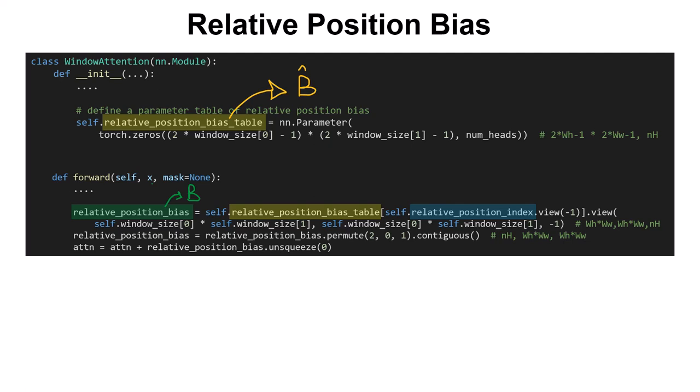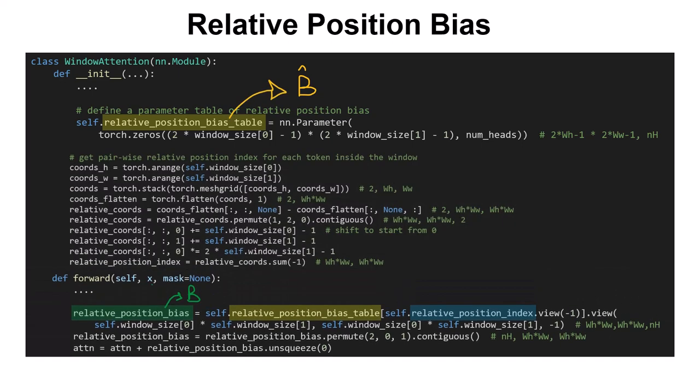So our question is: how can we construct this relative_position_index and pick the values of B-hat to construct B? Before explaining that, let's see what happens next. They permute and change the dimension of relative_position_bias, and then the attention — which is the outer product of query and key — is added by this relative_position_bias. Then there is softmax and multiplication by value. But let's see how we construct this relative position index.